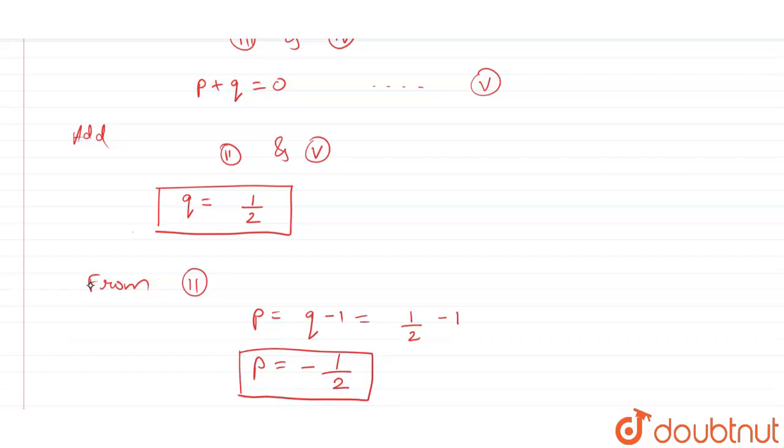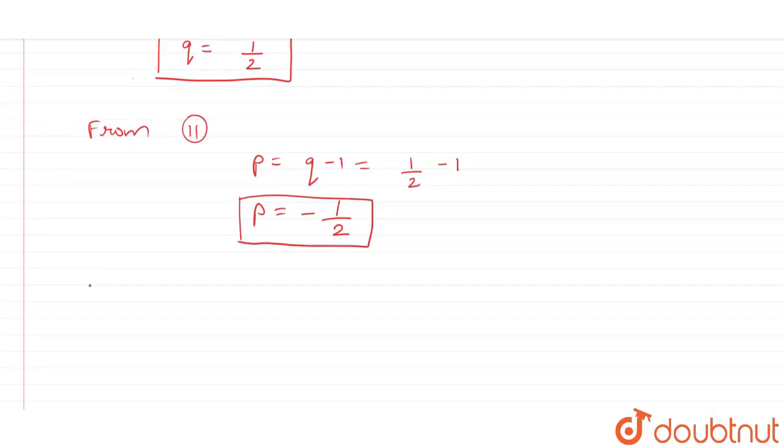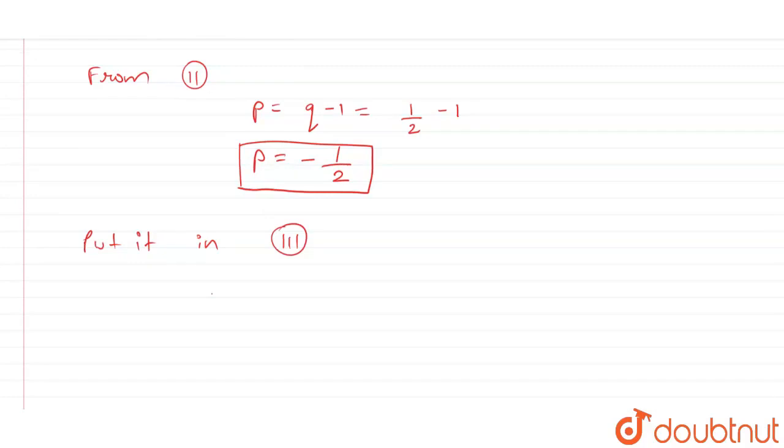So, here we have also found the value of p. Therefore, we have the value of p and q, we will put it in equation 3. So, as per our equation 3, when the values are put, it will become 3 into minus 1 by 2 plus 2 into 1 by 2 plus r, which is equal to 2. On solving this, we will get the value of r is equal to 5 by 2.